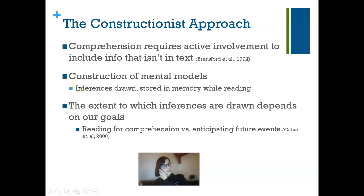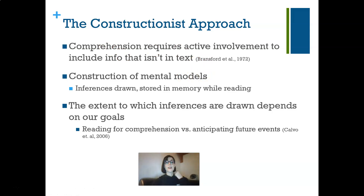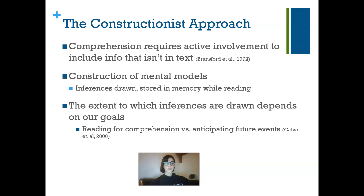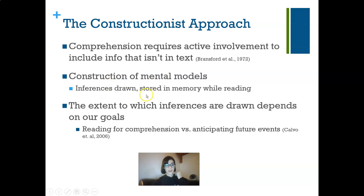One model for how we make inferences is the constructionist approach. According to Bransford and colleagues in 1972, comprehension requires active involvement to include information that isn't in the text — for example, the title. In the famous Bransford and Johnson 1972 study, a very vague paragraph about washing clothes was given to participants. Those given the title 'Washing Clothes' remembered and understood the paragraph better than those who weren't. The title helped create a mental model, from which you can draw inferences and store them in memory as you read.